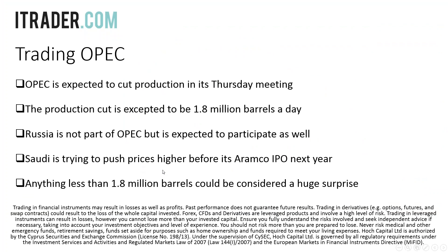Saudi Arabia is also trying to push prices higher before its Aramco IPO next year. Aramco is a Saudi Arabian government company — they want to go public on the New York Stock Exchange, just like Apple or Facebook on Nasdaq. Right now it's a government company owned by Saudi Arabia, but they want to have publicly traded stocks, which means they want oil prices to be as high as possible in order to make more profits and list shares at a higher price. This is another reason why Saudi Arabia wants to cut production in two days.